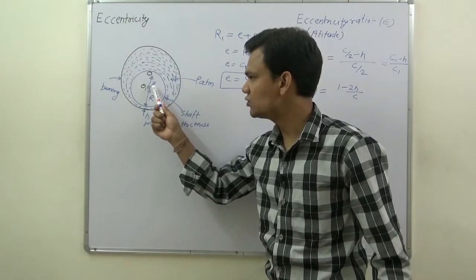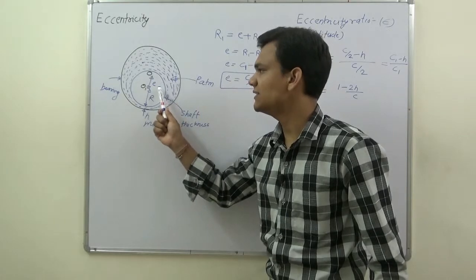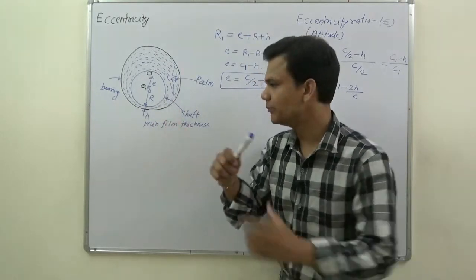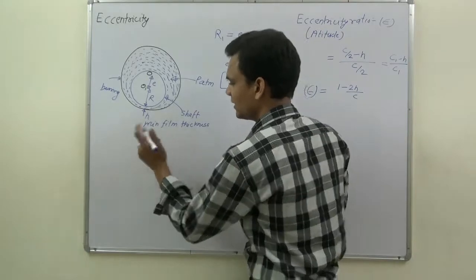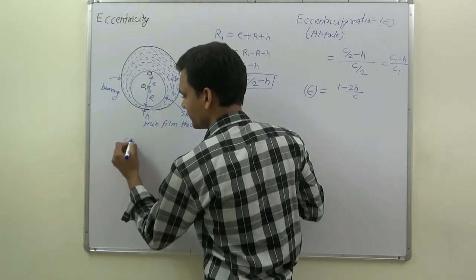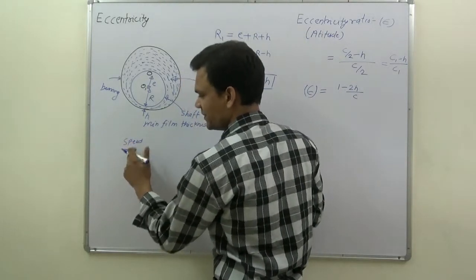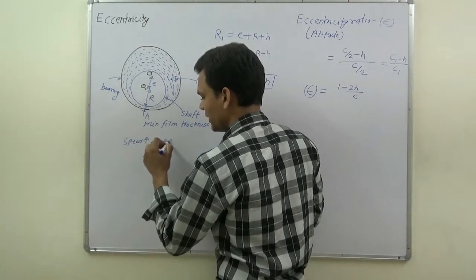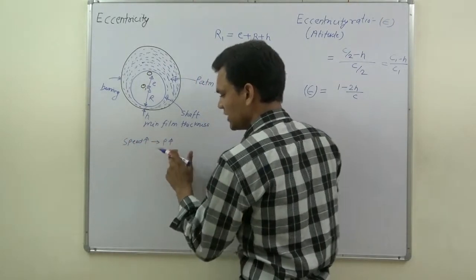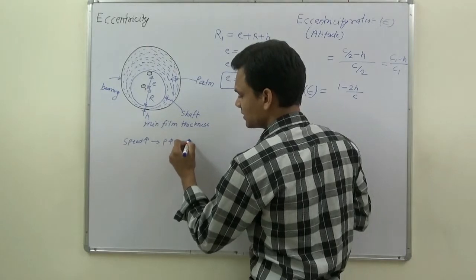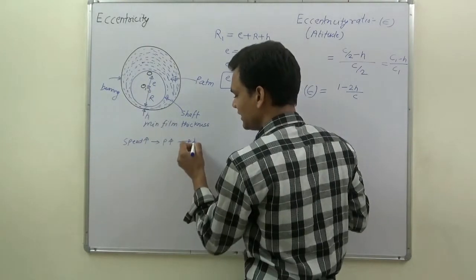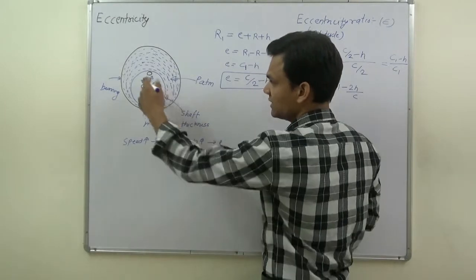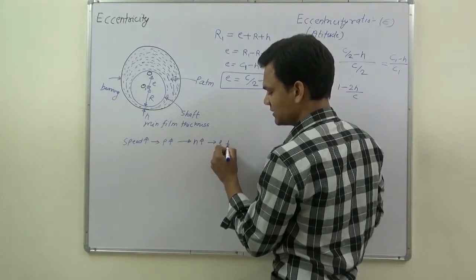E is showing eccentricity. Eccentricity depends upon various terms. As the speed of the shaft increases, the pressure of the lubricant will also increase. Due to this, the minimum film thickness will also increase, and eccentricity of the shaft will decrease.